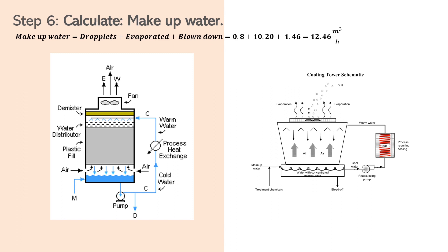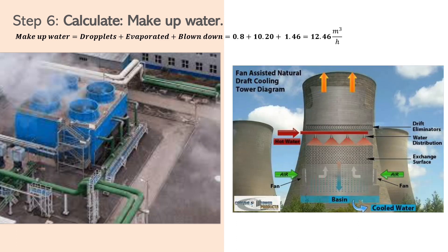If you add everything together it should give you roughly 12.46 meter cubed per hour. Basically we have to make up 12.46 meter cubed for every hour of water that we lose in this particular cooling tower system.